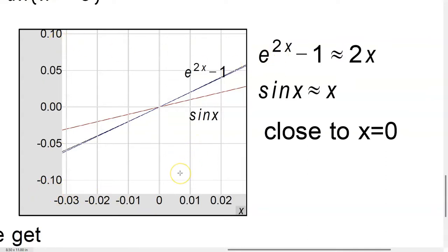And within this neighborhood, you can't really tell the graphs apart. e to the 2x minus 1 is just about 2x. There's like a slight deviation over here, but close to 0 right here, there's no deviation where my hand is pointing. And sine of x is just about equal to 2x right here. You can't really tell them apart, and this is close to 0.